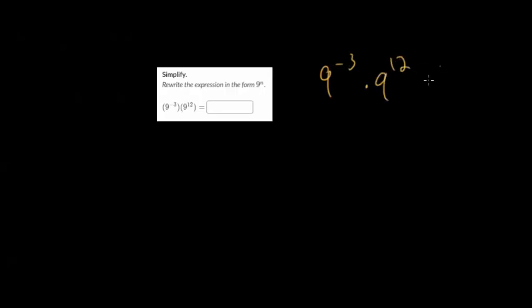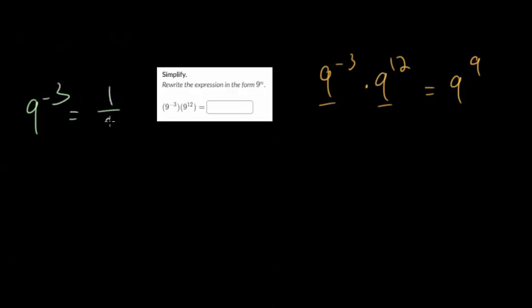For this first one, we want to rewrite this as 9 to some power. We have 9 to the minus 3 times 9 to the 12th. We know that if they have the same base and we're multiplying, we just add the exponents. So minus 3 plus 12 would be 9, giving us 9 to the 9th. And if you want to understand it from basic principles, 9 to the minus 3 is just 1 over 9 cubed — you're dividing by 9 three times. So this would be 9 to the 12th divided by 9 to the 3rd.